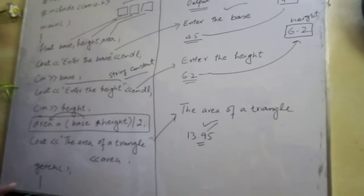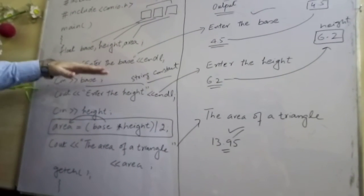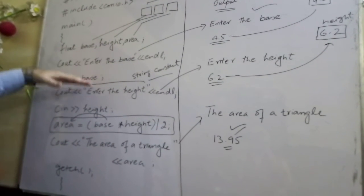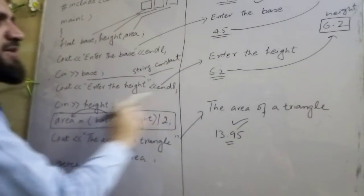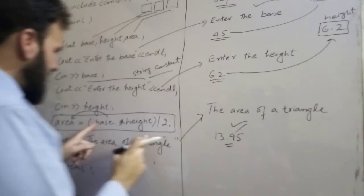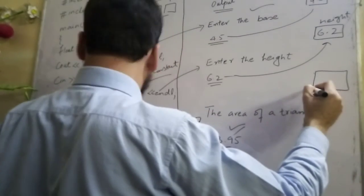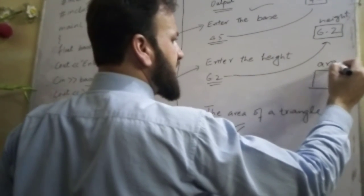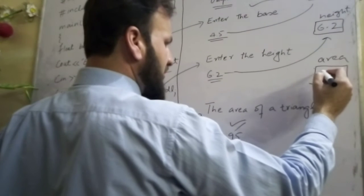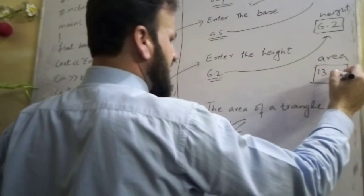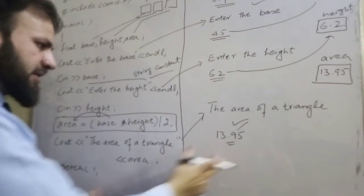Now, we have three variables: base, height, area. Enter the base using cin base. Enter the height using cin height, which stores in the height variable. Then the formula calculates the area, and then the cout statement will display the value.